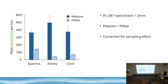Here are a few results. This is just the mean abundance per sampling line — one malaise trap and five pitfalls. We had completely different sampling effort on the three rivers by the end of the study, so we corrected for that. We got 91,000-odd specimens in the greater-than-two-millimetre size class that we bothered to ID — pretty standard for bug work. As you'd expect, you get a lot more in malaise traps than in pitfall traps. The Aparima had the highest abundance, followed by the Cass, and the Ashley were very similar.